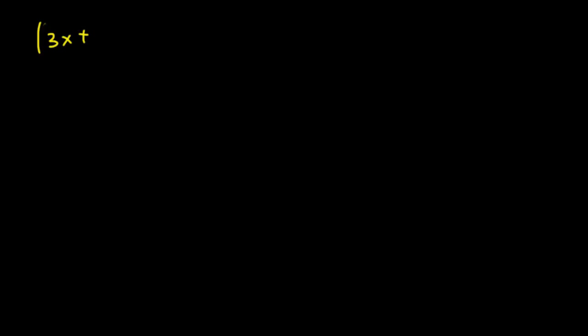Let's look at (3x + 2y) raised to the power of three. Remember the coefficients are one, three, three, one — we're going to use exactly those coefficients. This will be a very long expansion. So that would be 3x cubed multiplied by one, plus three multiplied by 3x squared multiplied by 2y...